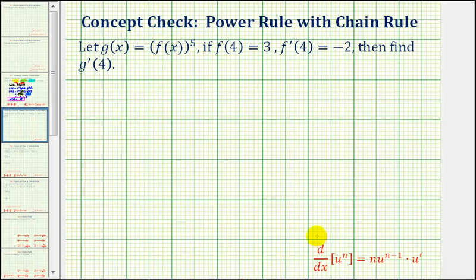If we look at the provided derivative formula given here, this is the power rule with the chain rule built in where u is the inner function. Notice how the derivative is a product where this first factor is the derivative of the outer function, and the second factor, u prime, is the derivative of the inner function.